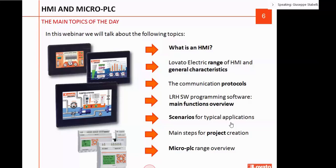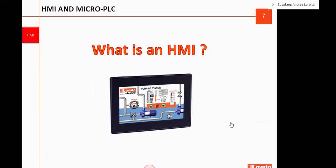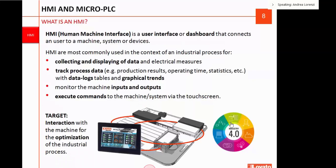This is Andrea Lorenzi speaking. We start this webinar from the world of HMI. An HMI, or human machine interface, is a user interface or dashboard to connect a user to a machine, system, or devices. HMIs are normally used for the control of an industrial process to collect and display data, to track process data — for example, to see production results, operating time, statistics — using data logs and graphical trends. They are also used to monitor inputs and outputs of the machine or to perform commands using the touchscreen.